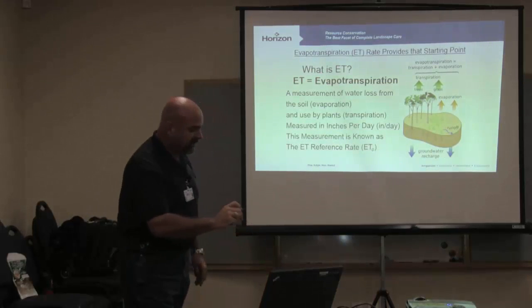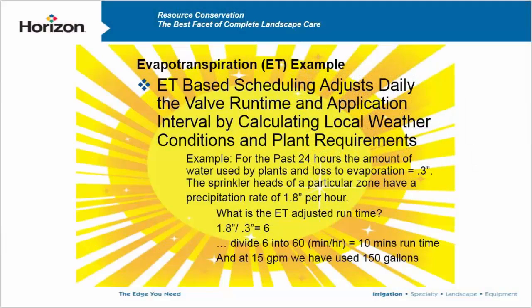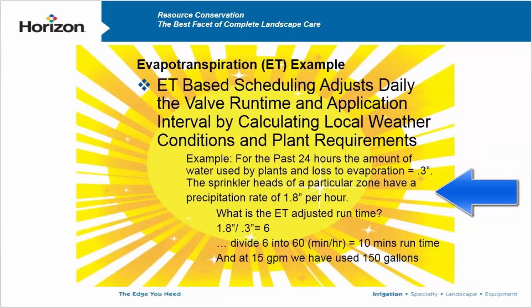Let's say today is a bright sunny day outside. We've got a valve with plant material on it, and for the past 24 hours on this valve, that plant used 0.3 of an inch of water in evaporation. The sprinkler heads on those zones have a precipitation rate — the amount of water that comes out of that sprinkler head and gets down into the turf — of 1.8 inches per hour.